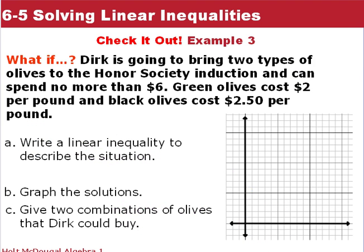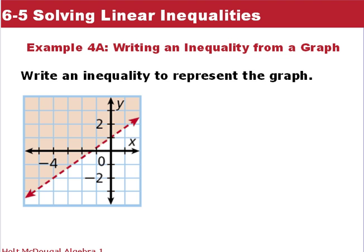Now it's your turn. Dirk is going to bring two types of olives to the Honor Society Induction, and it can cost no more than $6. Green olives cost $2 per pound and black olives cost $2.50 per pound. Start by writing an inequality, with $6 as your maximum that can be spent.